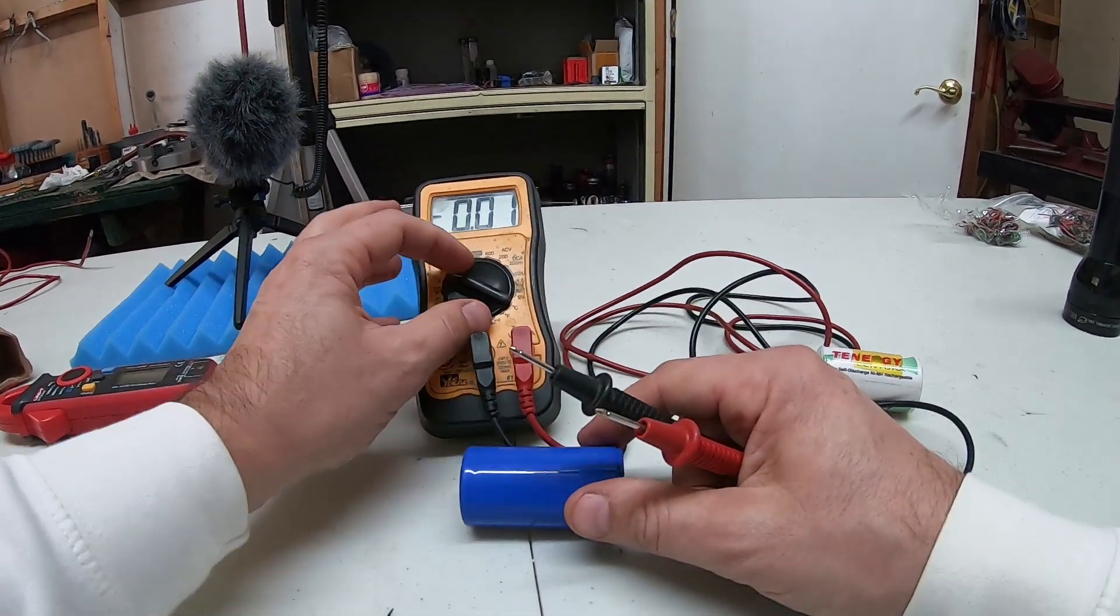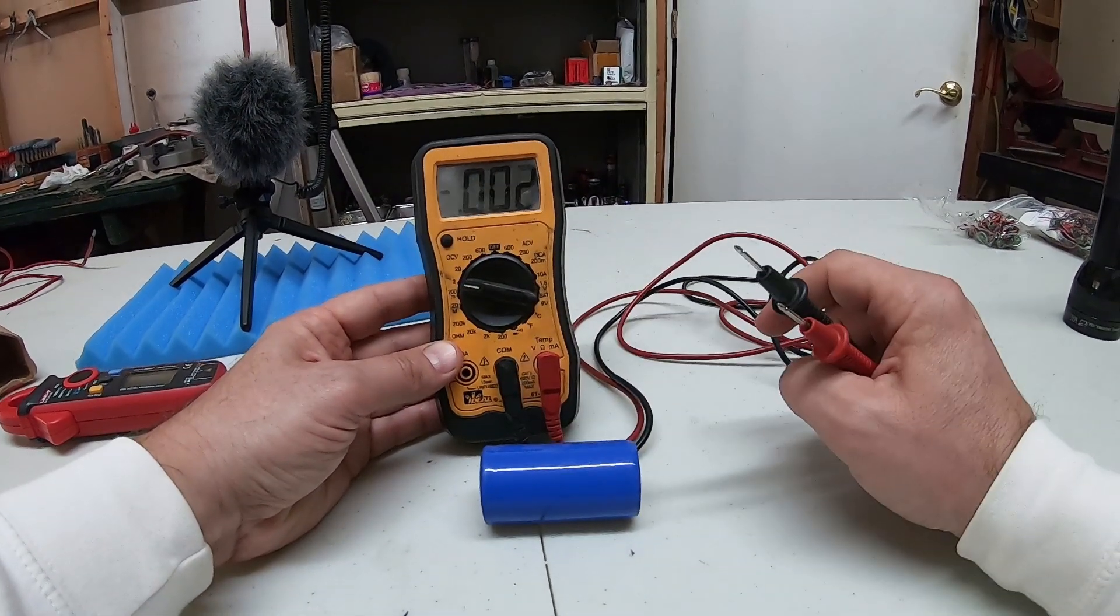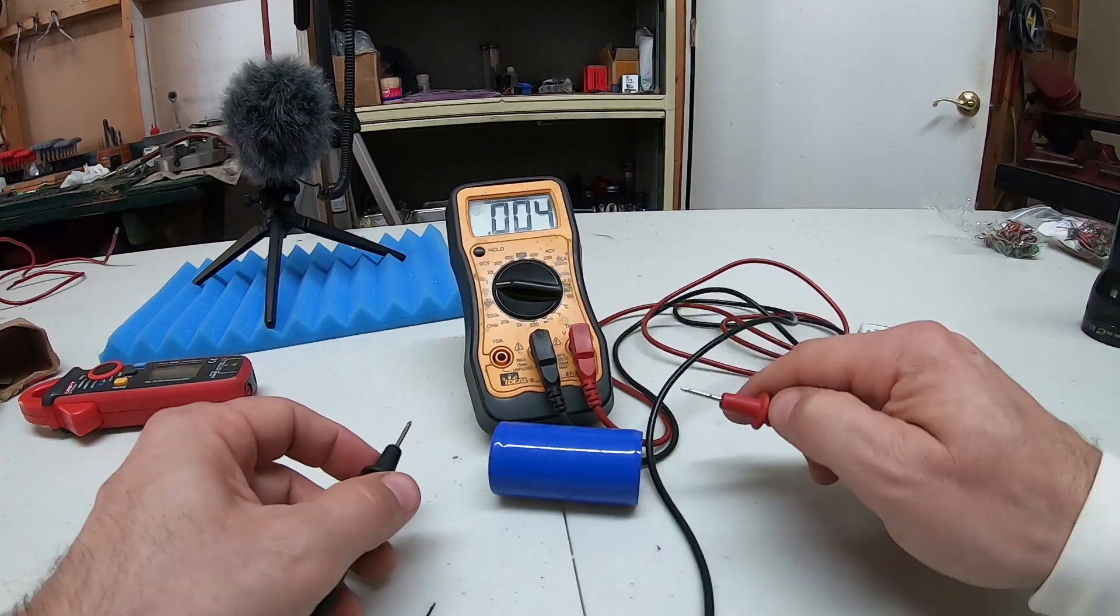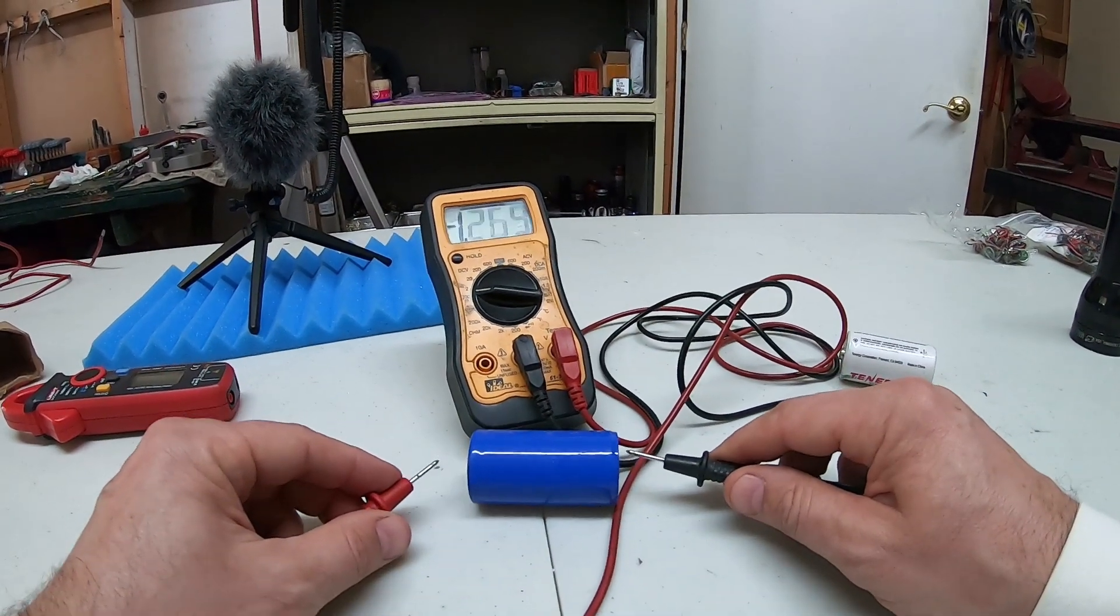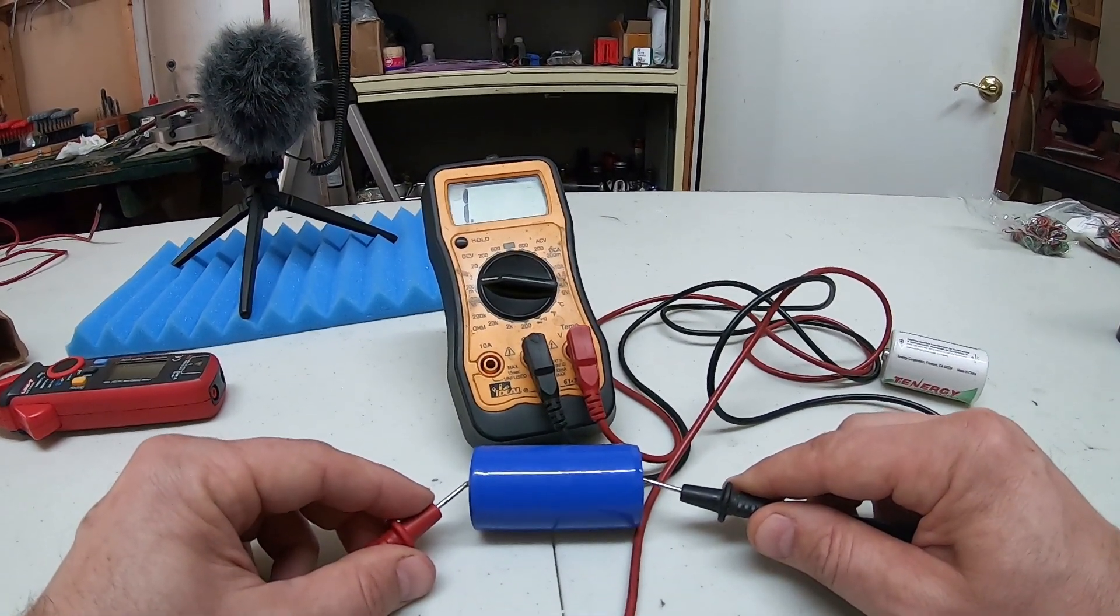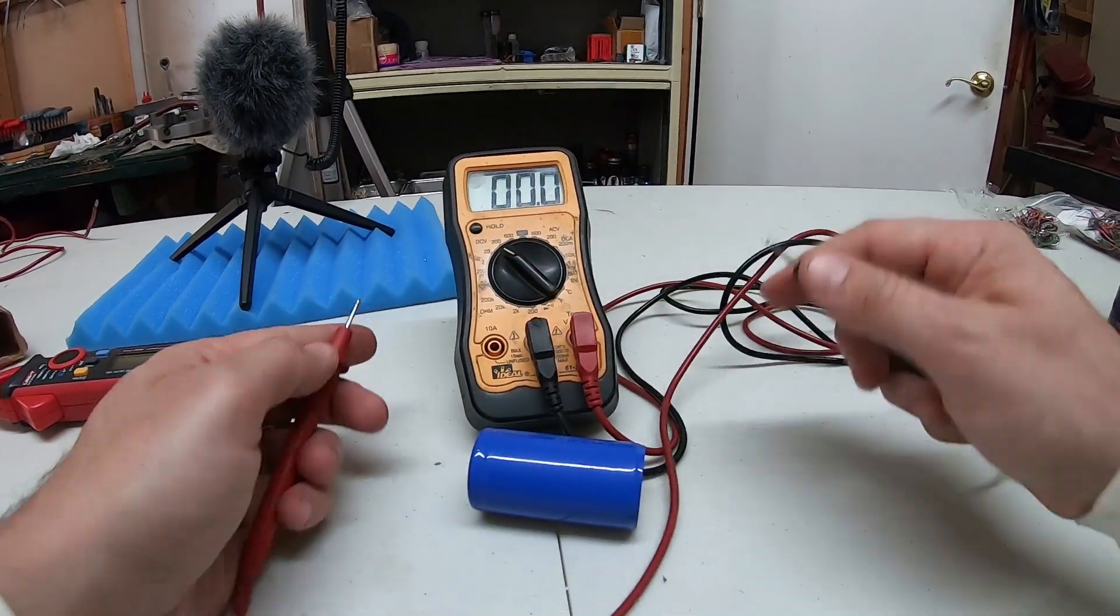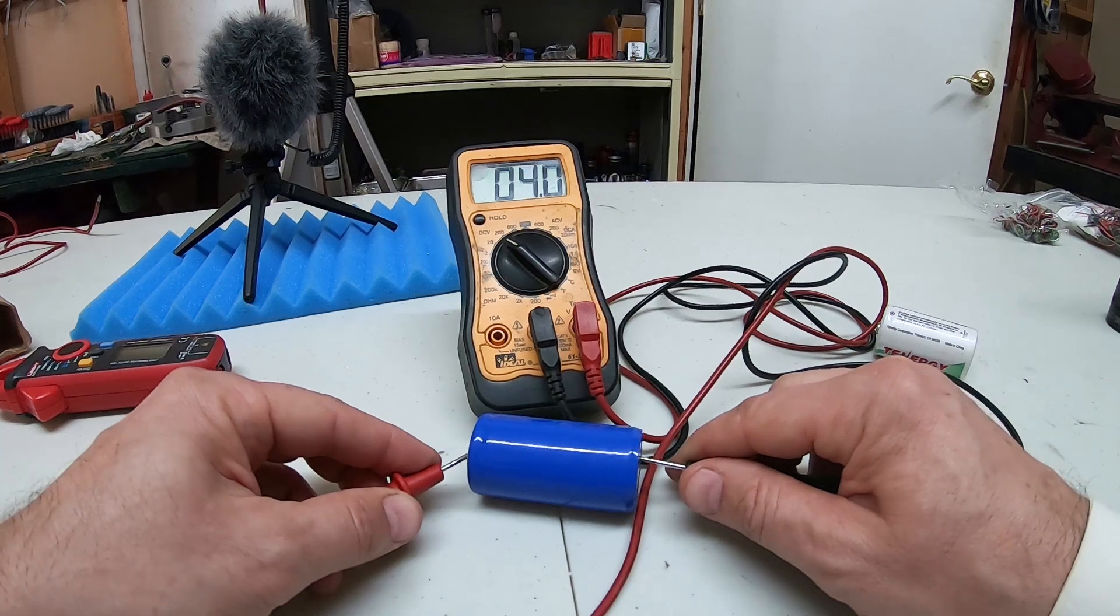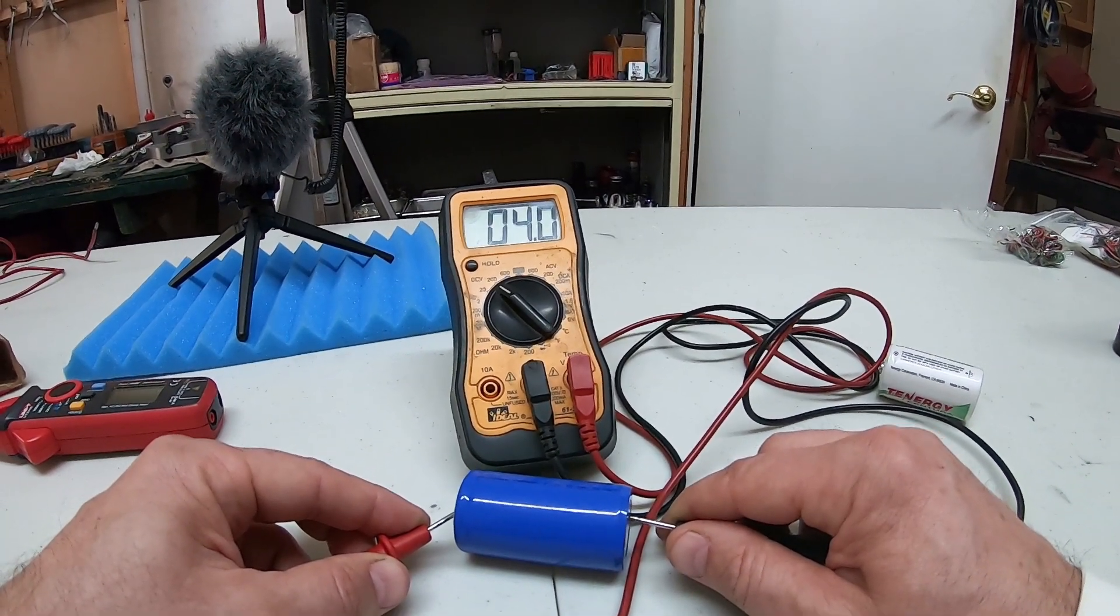Now if we had been on the wrong setting, if we had gone to 2 volts, basically all that would happen is the meter would max out like that. You see how it gives us that one. That means you're over the range. We could go up to hundreds but we'd just get a little bit less accurate of a reading. We lose a decimal point there.